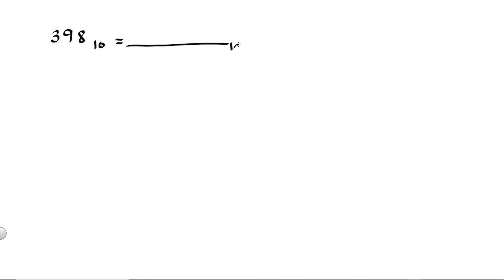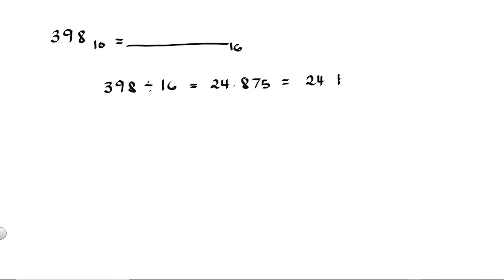Now for our conversion, let's say we have 398 decimal and convert it to hexadecimal. What we are going to do is divide 398 by 16. 398 divided by 16 is equal to 24.875. We have 24, and to get the remainder we multiply the fractional part 0.875 by 16, which equals 14. So we have 24 remainder 14.